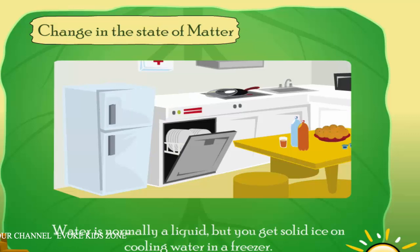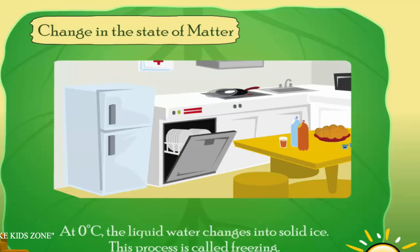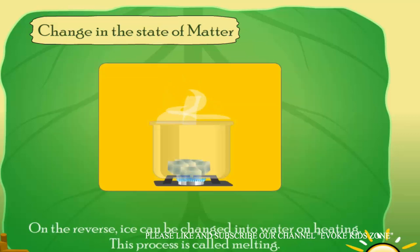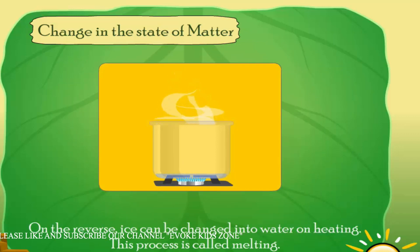Water is normally a liquid, but you get solid ice on cooling water in a freezer. At 0 degrees Celsius, the liquid water changes into solid ice. This process is called freezing. On the reverse, ice can be changed into water on heating. This process is called melting.